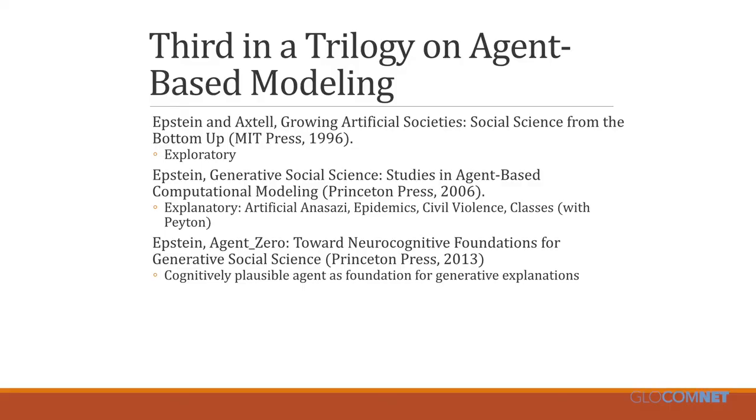Today, I wanted to tell you about Agent Zero and generative social science. Mainly, I want to tell you about this new theoretical entity, Agent Zero, recently published by Princeton University Press — Agent Zero: Toward Neurocognitive Foundations for Generative Social Science. It's the third book; I see it as the third book in a trilogy on agent-based modeling.